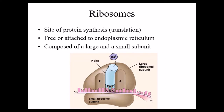Ribosomes — you may remember if you've had some biology before — the main function here is protein synthesis, also referred to as translation. We'll talk briefly about translation later in the chapter. Protein synthesis, or making proteins, takes place in the ribosomes. The ribosomes are in the cytoplasm of the cell. Some ribosomes are free — they're not attached to anything, just suspended out in the cytoplasm. Other ribosomes are attached to another organelle called the endoplasmic reticulum.